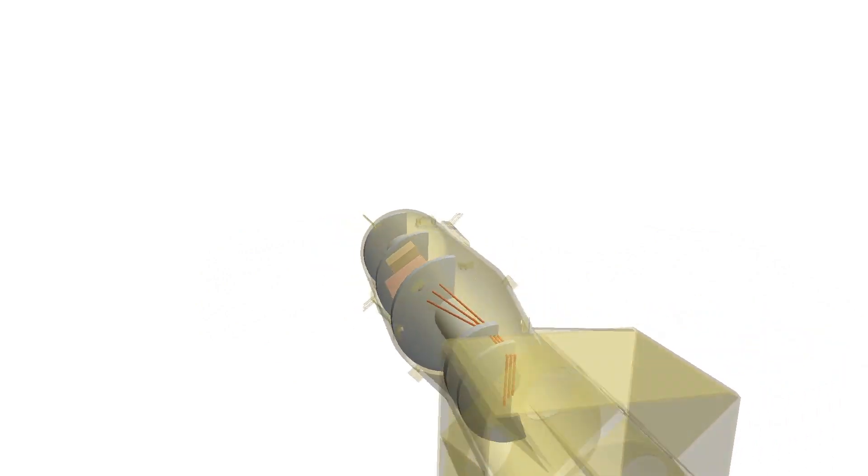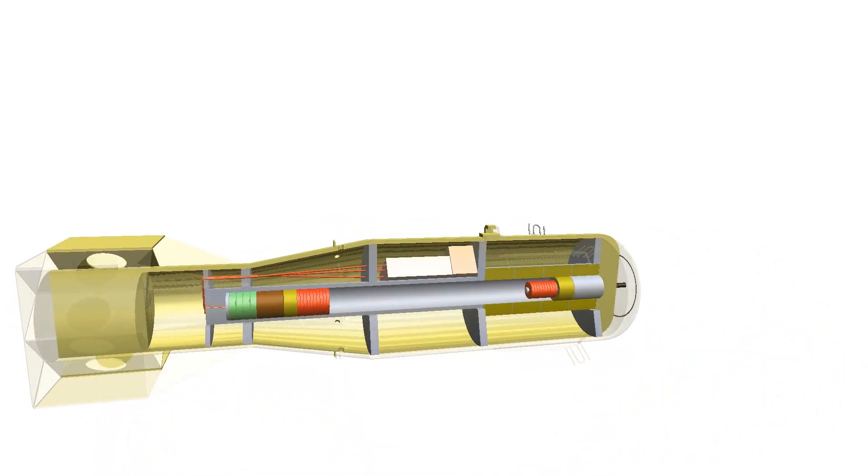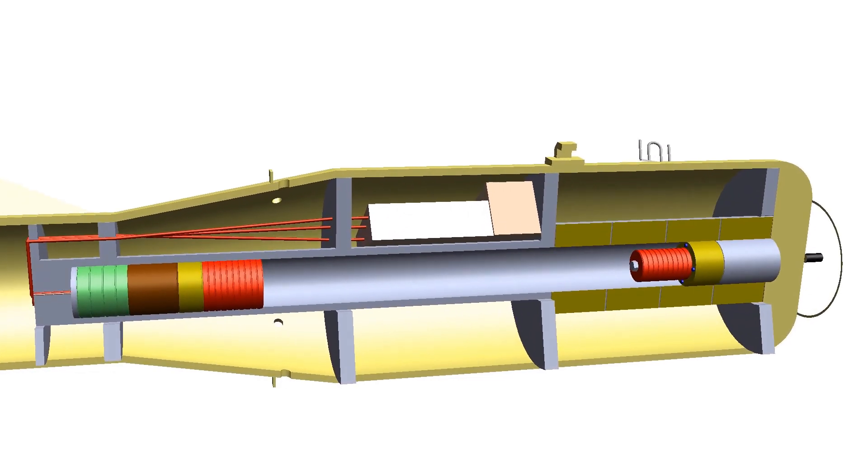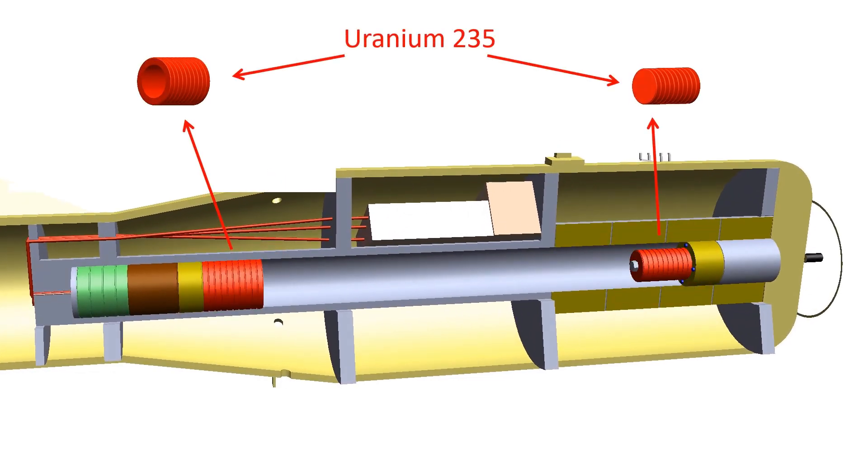Let's take a look inside. The fuel used for the nuclear explosion is enriched uranium-235, which is formed into two shapes.